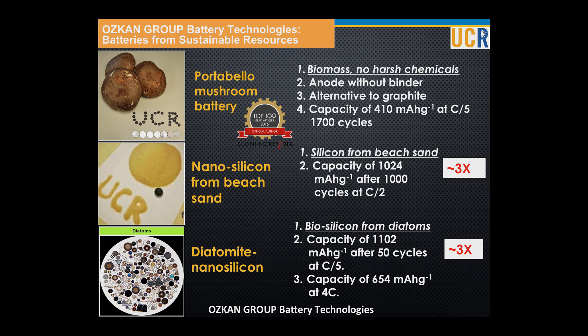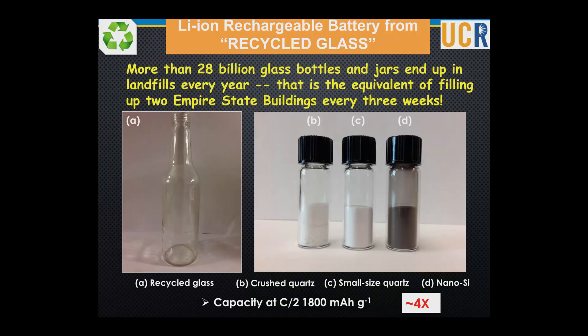Another recent work used diatoms, which are bio-silicon, converting them into a usable format for our batteries — also about three times better performance. Since recyclability was one of my climate actions on campus, we tried to use recyclable material to make batteries. More than 28 billion glass bottles and jars end up in landfills every year — equivalent to filling two Empire State buildings every three weeks. We successfully took recycled bottles, processed them, and made batteries with four times better performance.